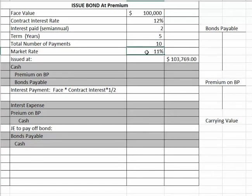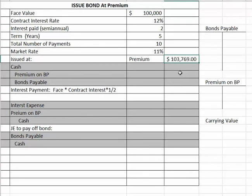The market rate of this bond is eleven percent. As you read through the chapter you'll find that if the market is paying a lower percentage than we are, then we can sell our bond at a premium. In this example we're going to sell this one hundred thousand dollar bond for one hundred and three thousand seven hundred and sixty-nine dollars.